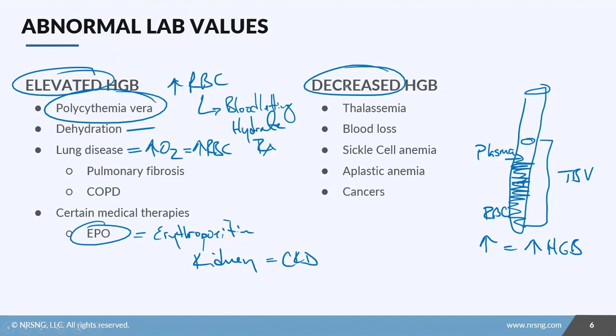Conditions that you might consider for a decrease in hemoglobin: thalassemia, which is a genetic disorder that affects red blood cells and hemoglobin production; if you have some sort of hemorrhage; if you've got sickle cell anemia or aplastic anemia; certain types of cancers. Obviously, your treatment for anemias and blood loss are going to be blood transfusions.